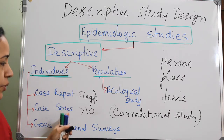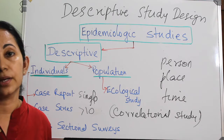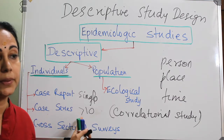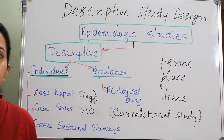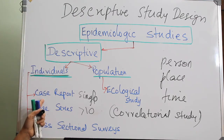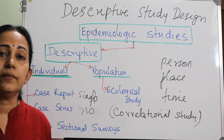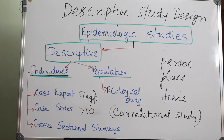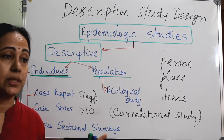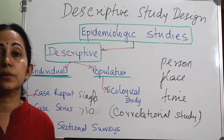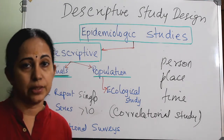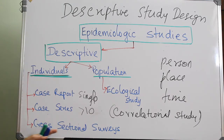Case reports and case series may lead to or give the scientific and health community knowledge of newer technologies or newer diseases. This happened with HIV AIDS: a single case of disseminated Kaposi's sarcoma in a homosexual male was presented as a case report, which later pointed to the diagnosis of HIV AIDS. Similarly, a case series of Pneumocystis carinii pneumonia in a group of homosexual males was reported, which later led to the discovery and diagnosis of HIV AIDS.